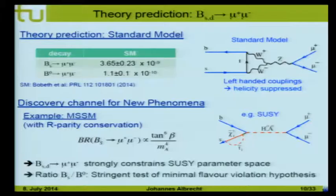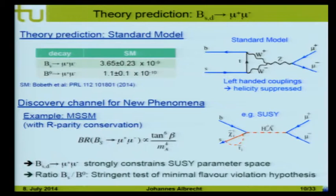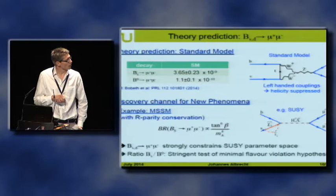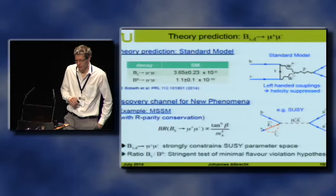Let's start with the search for Bs and B0 to mu mu. This is a very interesting channel because it's very rare in the standard model — predicted at a branching fraction of 3.6 × 10⁻⁹. It's rare because it's a flavor-changing neutral current, and on top of that, it's helicity suppressed, giving another factor of 10⁻⁴. That makes it very interesting because in many extensions of the standard model, new scalar particles — like additional Higgs bosons — lift the helicity suppression and give a large enhancement in the branching ratio. In the minimal supersymmetric model, this is predicted to be proportional to the sixth power of tan β, so it could in principle go very high.